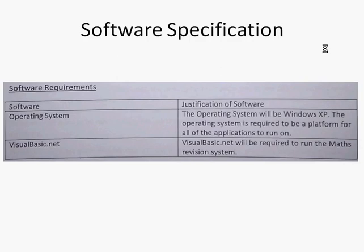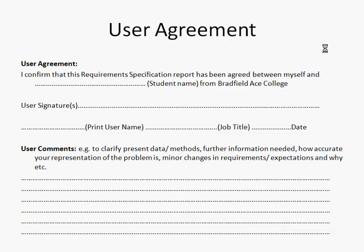This is going to be a short piece of work on the whole, so there's an example. The user agreement part might look a bit like this — you just need to get your user to read through your analysis, in particular the agreed objectives in your requirements specification: what the user wants your system to do.